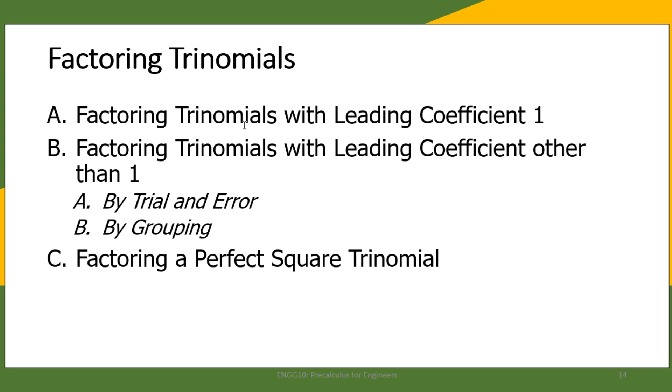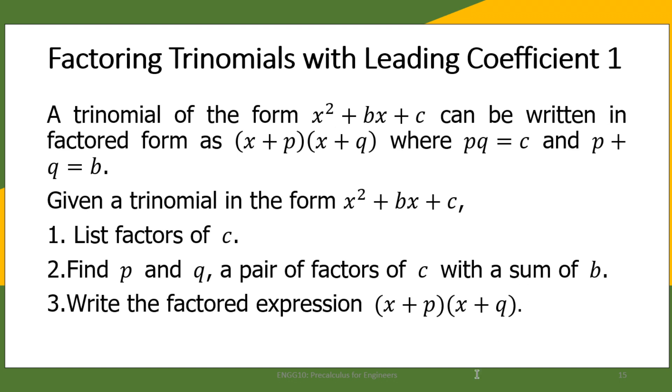Let us go to our first scenario: factoring trinomials with leading coefficient of one. A trinomial of the form x² + bx + c - this is what I'm talking about when I say trinomial in quadratic form. The degree is two. This can be written in factored form as (x + p)(x + q), where pq = c and p + q = b.